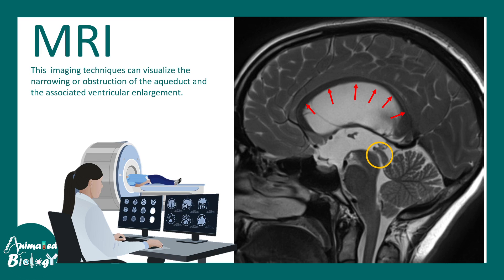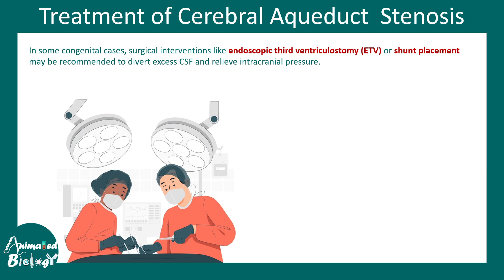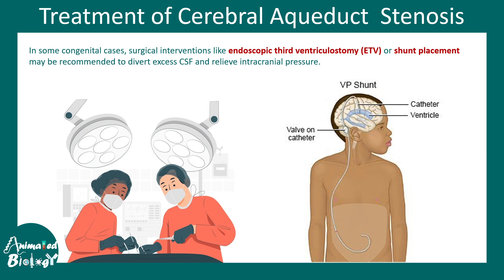Depending on the severity, this condition can be treated with surgical interventions like endoscopic third ventriculostomy, or placing a shunt which would drain excess fluid from the ventricles into the peritoneal cavity and thereby improve the situation.